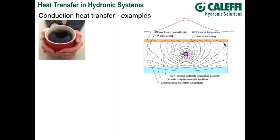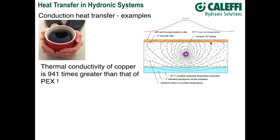Several years ago we did a study comparing different types of tubing embedded in a concrete slab: PEX, PEX-aluminum-PEX, copper, and rubber tube. We looked at the thermal conductivities and tried to assess how much effect a high-conductivity tube would have on overall heat transfer from the slab. The thermal conductivity of copper is almost a thousand times greater than that of a PEX tube. The question is: would using copper produce 941 times more heat output from the floor?